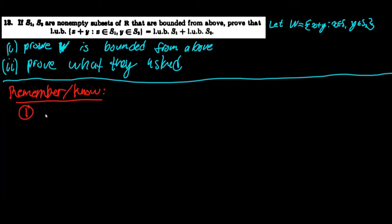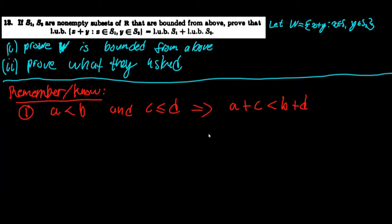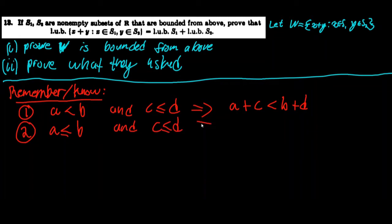The second result, which is an easy extension of the first: if a ≤ b and c ≤ d, then a + c ≤ b + d. I encourage you to watch the proof of the first result and try to extend it to prove the second — it's a straightforward extension.